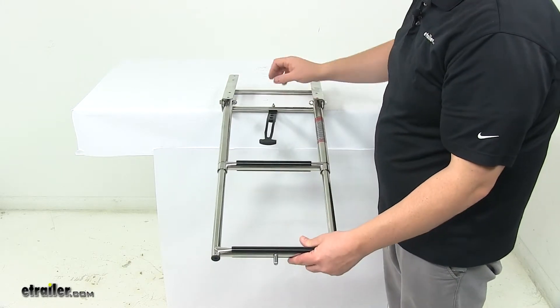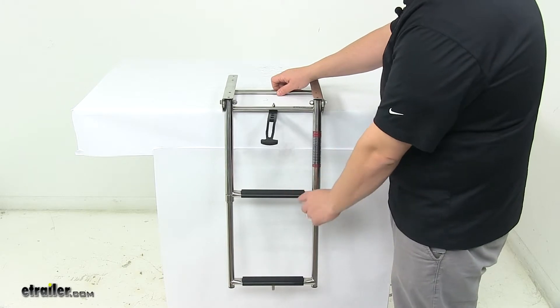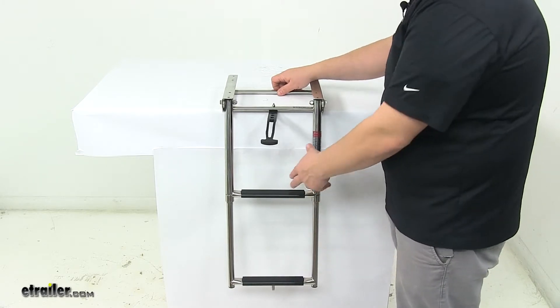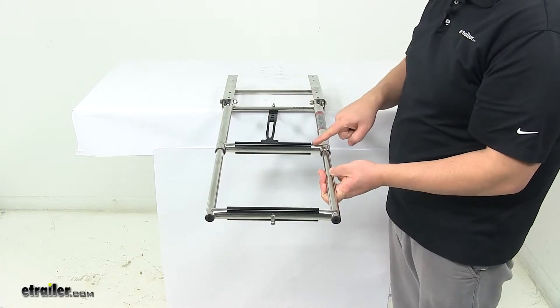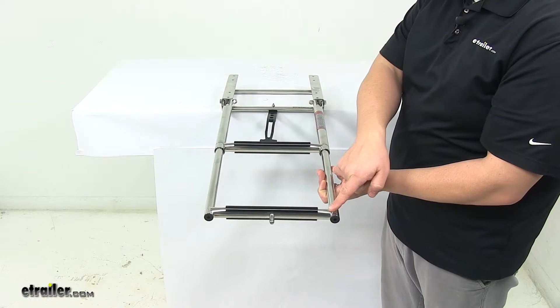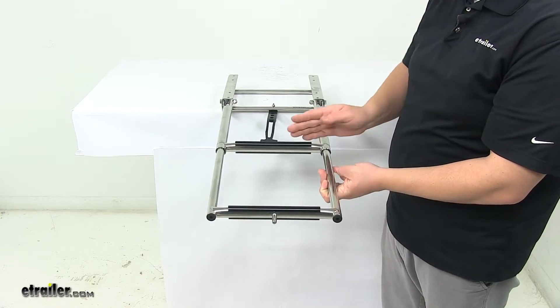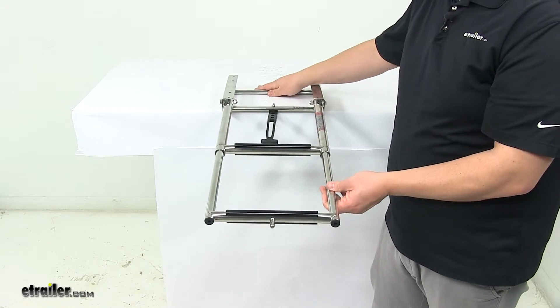The rungs are angled at a downward angle, so when you're in the water and you're trying to get your feet on here, the angled design makes that easier. I did take a measurement from the center of where that rung mounts to the same point below it at the rung below it. And center on center, these rungs are separated by about 11 and 1 quarter inches.